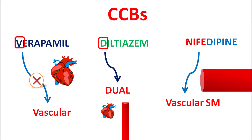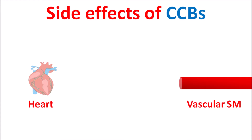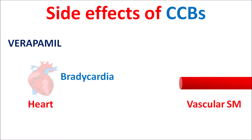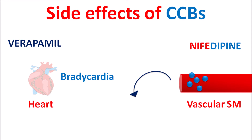Because of this small difference in location, they produce different side effects. All side effects of CCBs can be easily remembered with a simple mnemonic. L-type calcium channels on the heart are responsible for contraction, and those on vascular smooth muscle are responsible for vasoconstriction. Verapamil, being selective for the heart, blocks cardiac L-type channels, decreasing the rate of contraction and leading to bradycardia. Nifedipine and other dihydropyridines act on vascular smooth muscle, resulting in vasodilation, which leads to tachycardia.